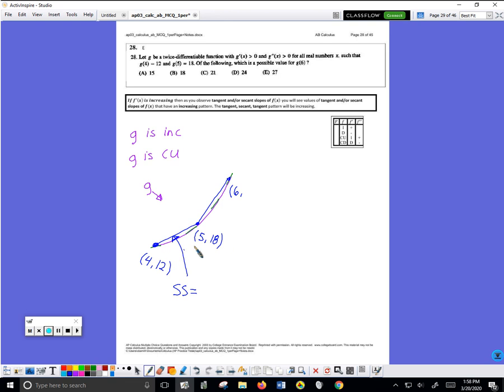That secant slope is going to be 6 divided by 1. Change in y is 6, change in x is 1, so that secant slope is 6.